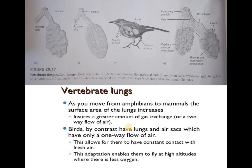Next is vertebrate lungs. Vertebrate lungs evolved as organisms moved from water to land. As organisms evolved from water to land, the lung structure and gaseous exchange mechanism changed. As we go from fish to amphibians, reptiles, birds, and mammals, the lungs become increasingly important because they require gaseous exchange and more oxygen for survival.